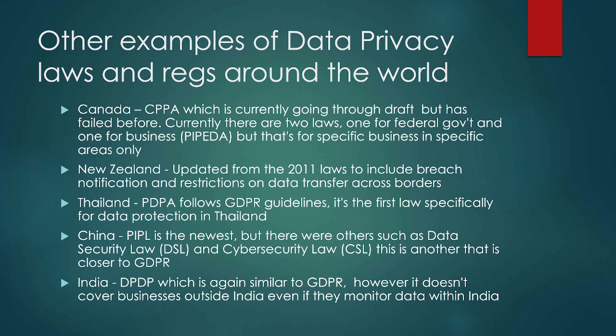Some other examples of data privacy around the world: Canada has a federal law and a business law but it's for specific businesses, and the general data privacy for everybody is going through draft. New Zealand has one that's been updated recently — they had one in 2011 and have since updated it. Thailand has one following GDPR, the first of its kind there. China has one closer to GDPR, and India also has one similar to GDPR, though it doesn't cover businesses outside India even if they monitor data within India. Most of these are following GDPR standards.